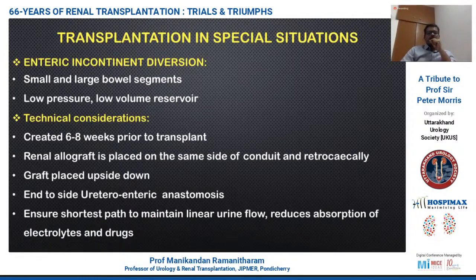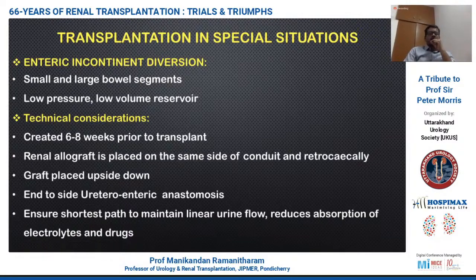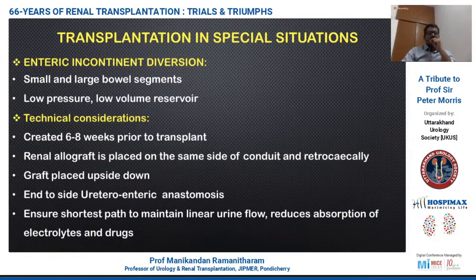When placed on the same side, the conduit is positioned retrocecally and the graft is placed upside down to reduce the distance between the conduit and the graft ureter, facilitating the anastomosis and reducing electrolyte absorption. A side-to-side ureterointeric anastomosis is preferred rather than searching for the proximal segment of bowel that may be surrounded by adhesions from previous surgery.